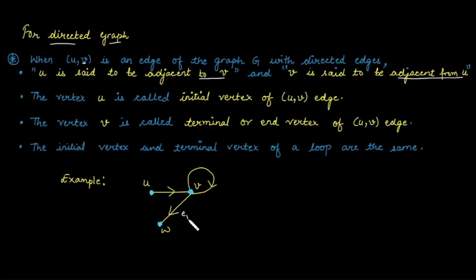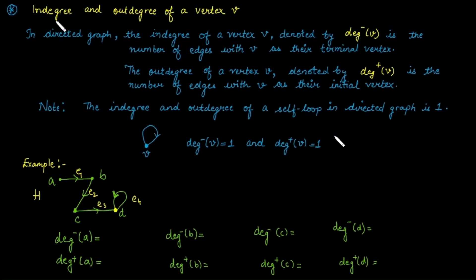For edge e1, the endpoints are v and w, where v is adjacent to w and w is adjacent from v. In this case, v is called the initial vertex for edge e1 and w is called the terminal vertex for edge e1. In the case of a self-loop, the terminal vertex and the initial vertex are the same.